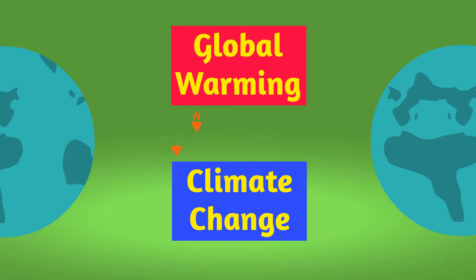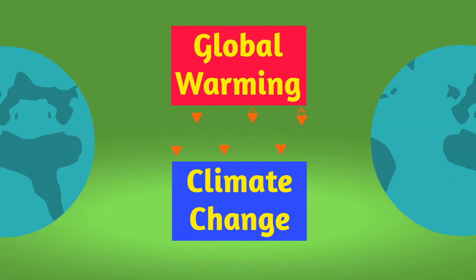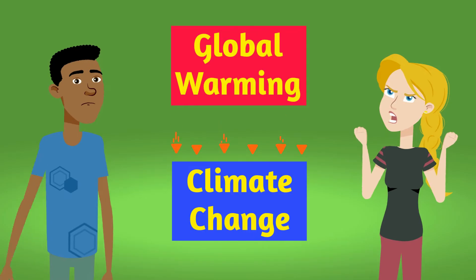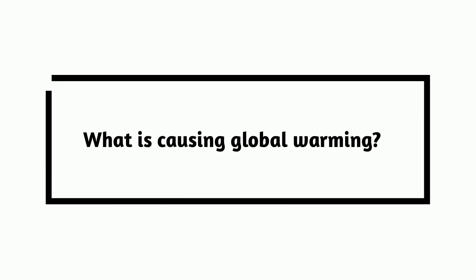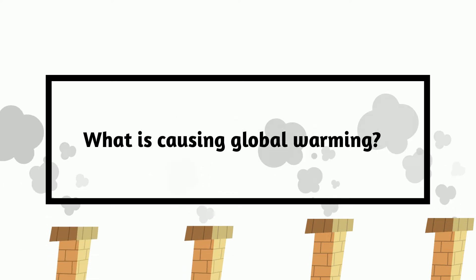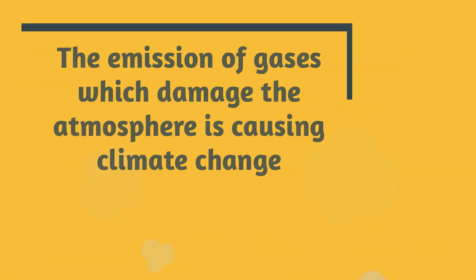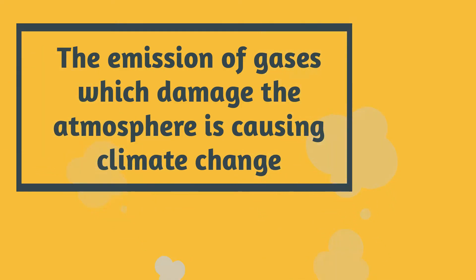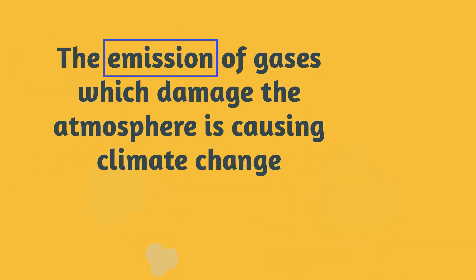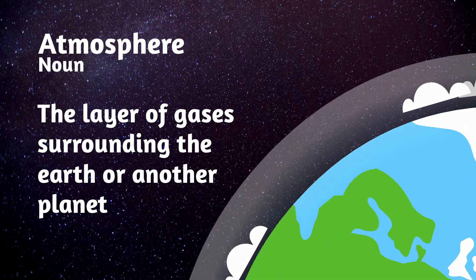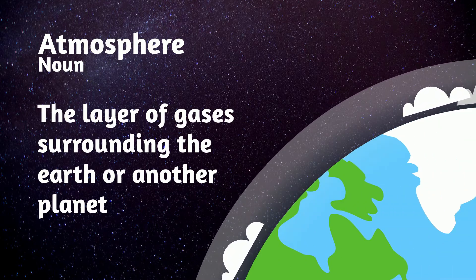So just to summarize: global warming is causing climate change, or another way to say it is that climate change is a result of global warming. So what is causing global warming? The emission of gases which damage the atmosphere is causing climate change. Emission is a noun meaning the production and discharge of something, especially gas or radiation. Atmosphere is a noun meaning the layer of gases surrounding the earth or another planet.